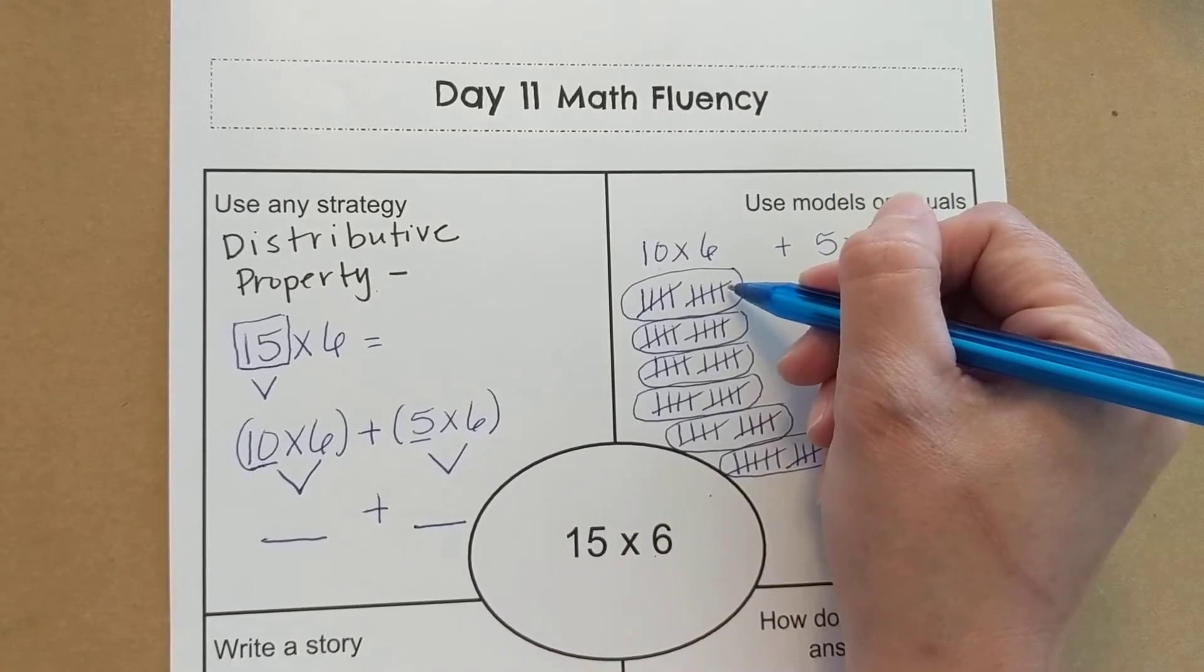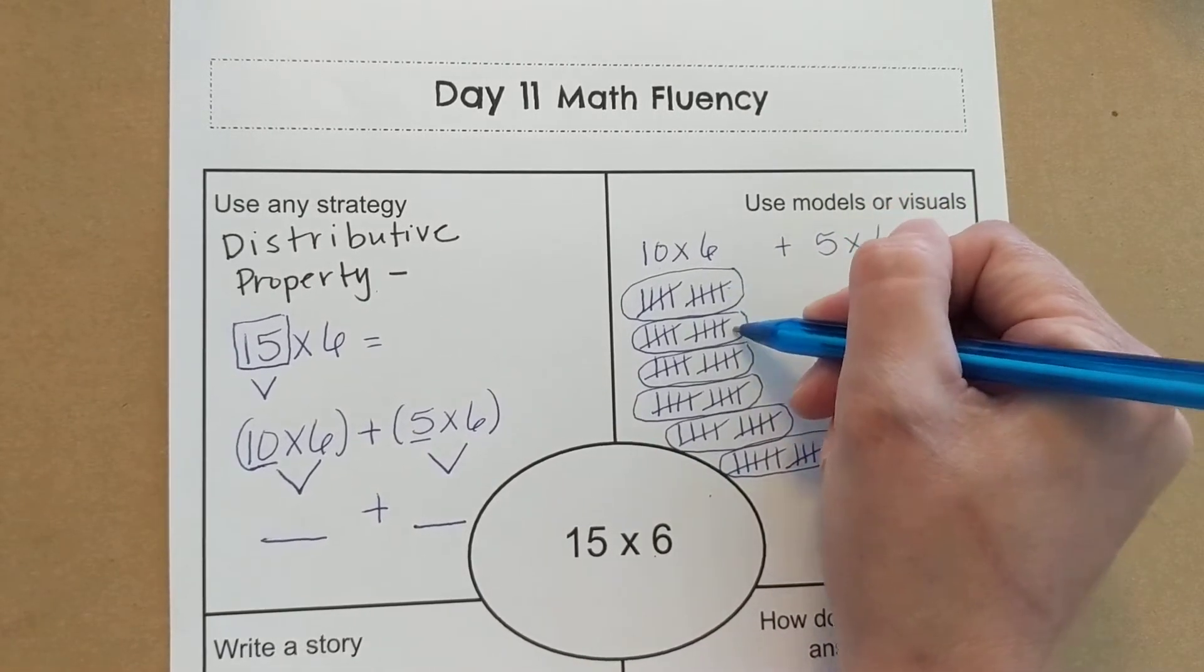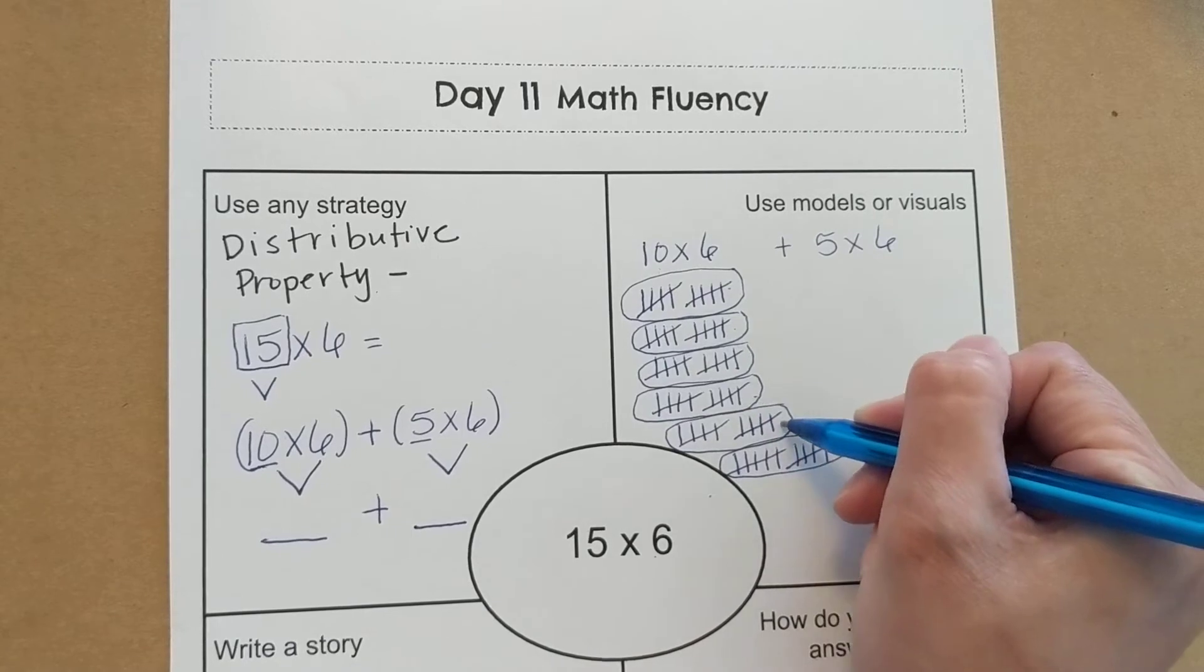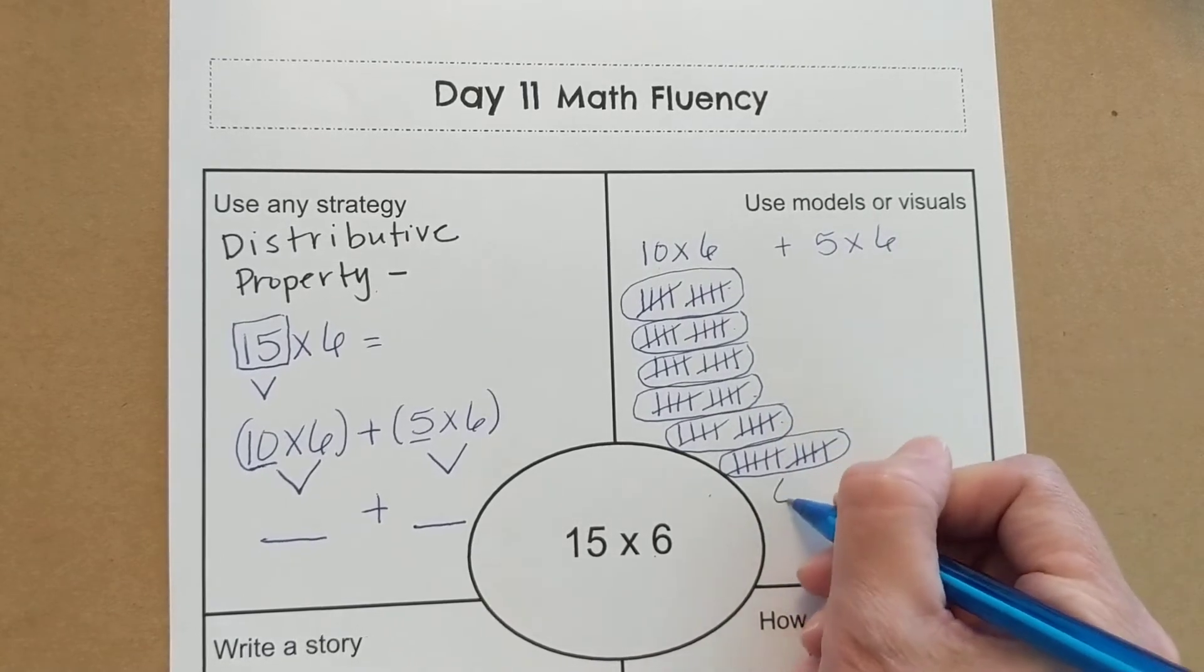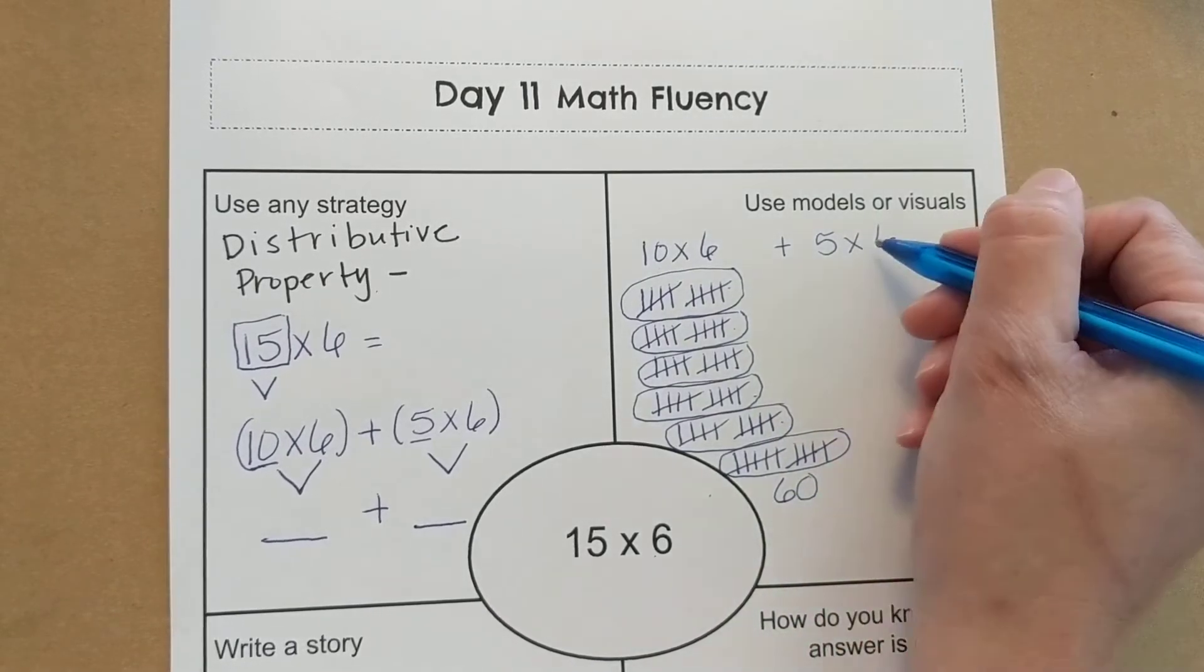We already know how to count by our 10s. Ready? 10, 20, 30, 40, 50, 60.